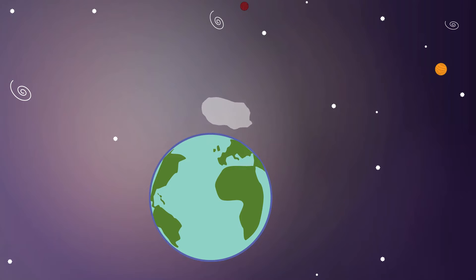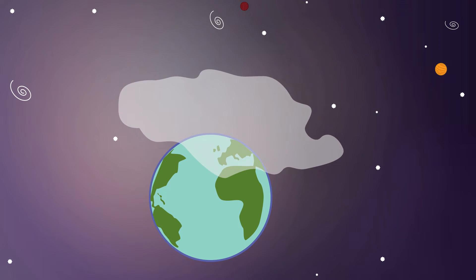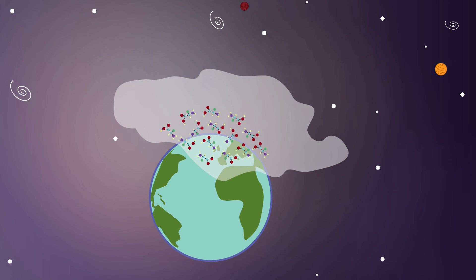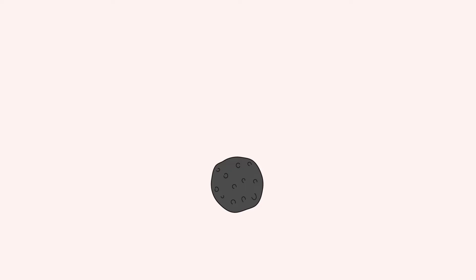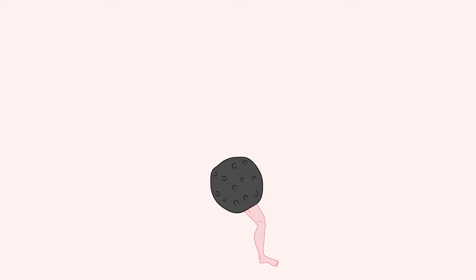This modern idea of panspermia theory originates from the observation of prebiotic chemicals present in interstellar clouds. It seems pretty evident that some raw materials such as amino acids must have fallen on Earth to help kickstart life.